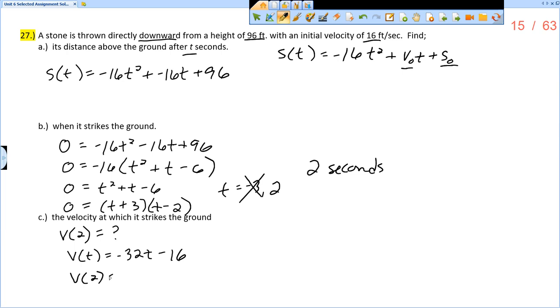And so now I just want to evaluate v of 2. So negative 32 times 2 minus 16. So negative 32 times 2 would be negative 64 minus 16. And so I get negative 80. So the object strikes the ground at negative 80 feet per second.